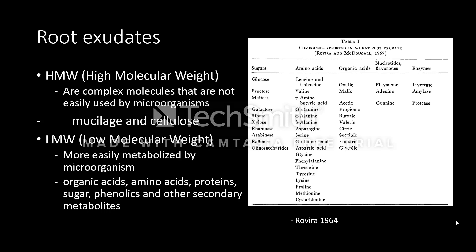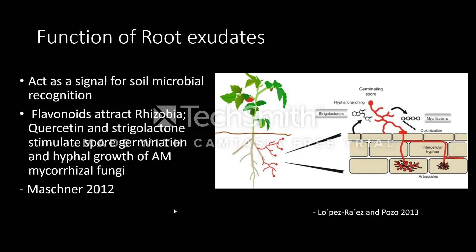We see different types of sugars, amino acids, organic acids, nucleotides, and secondary metabolites and enzymes. There are several functions of root exudates.